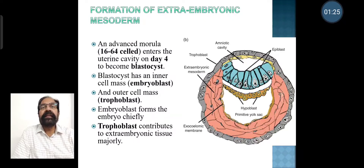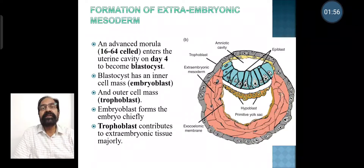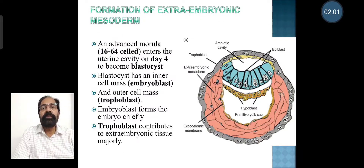In an advanced morula consisting of 16 to 64 cells, it enters the uterine cavity on day 4 to become a blastocyst. The blastocyst has an inner cell mass called embryoblast and an outer cell mass called trophoblast. The embryoblast forms the embryo chiefly, while the trophoblast contributes to extra embryonic tissue majorly.